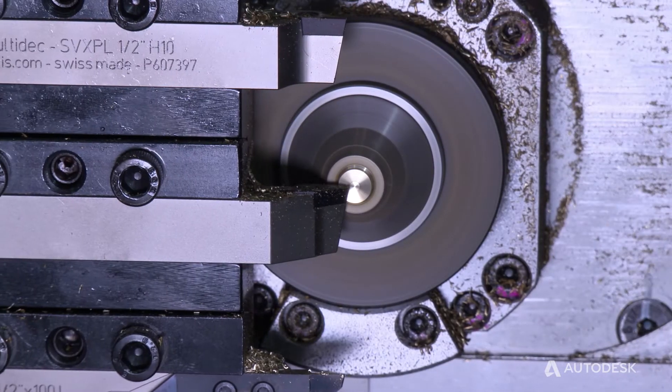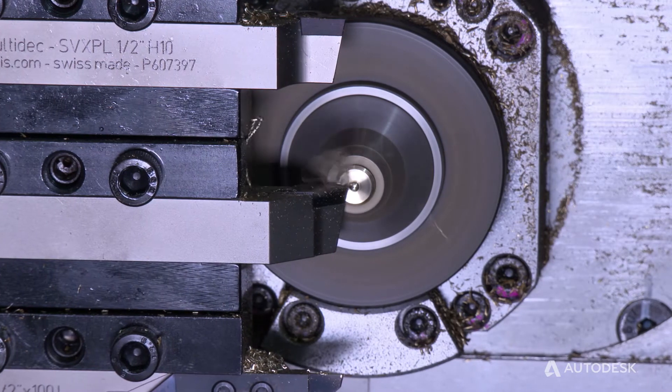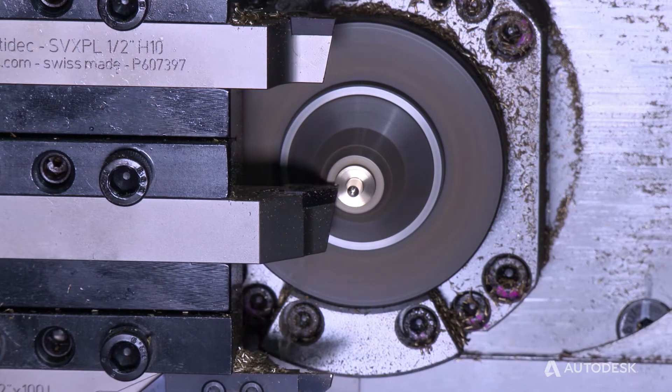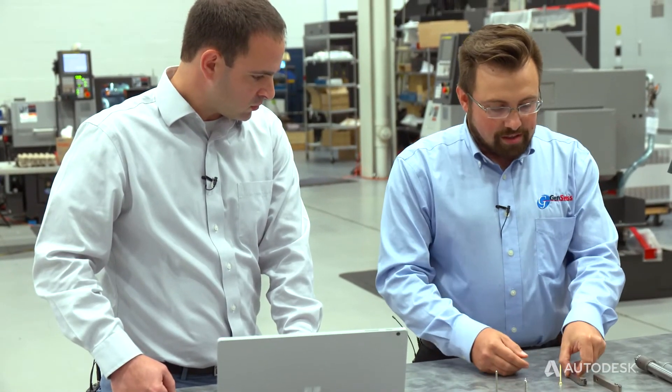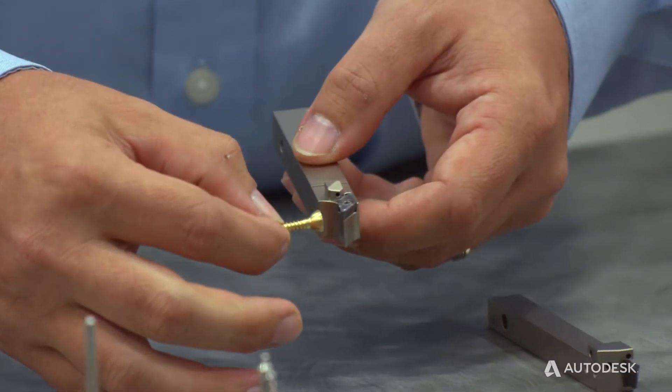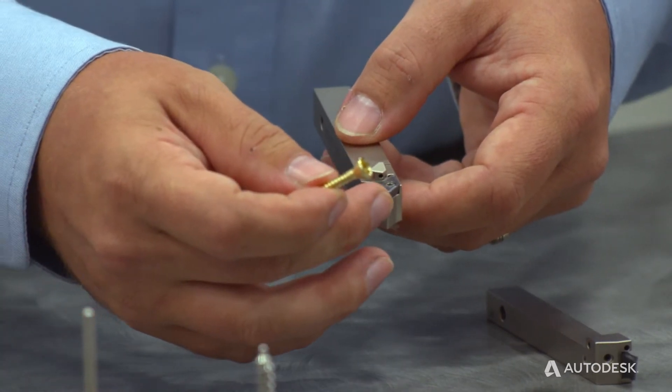What about the holder on these tools? Is the holder any different than it would be for any other type of insert? On this specific tooling line here, this holder will hold any geometry. This one here is a dedicated back turning holder, also with the benefit of coolant through.